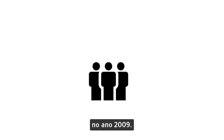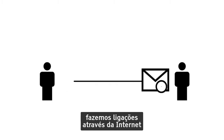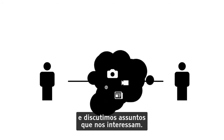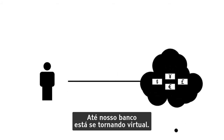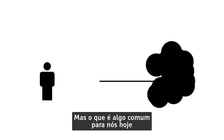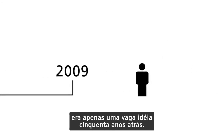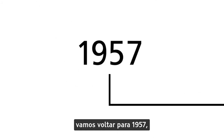The internet in the year 2009: we send emails, make calls over the internet, and discuss topics we take an interest in. Even our banking is going virtual. But what we take for granted today was only a vague idea 50 years ago. In order to understand how we got this far, let's go back to 1957.